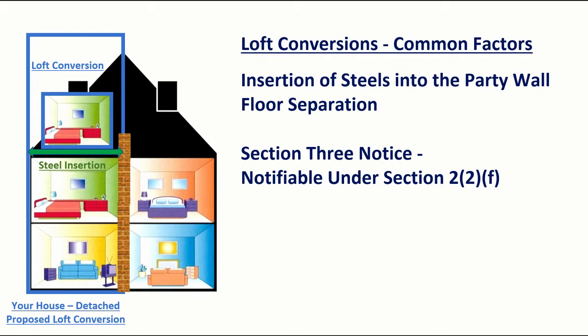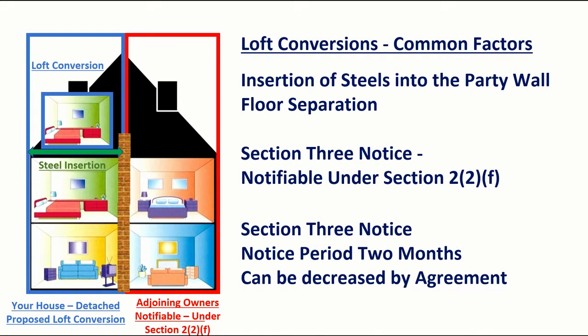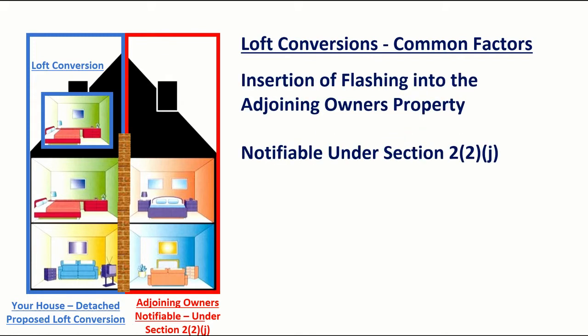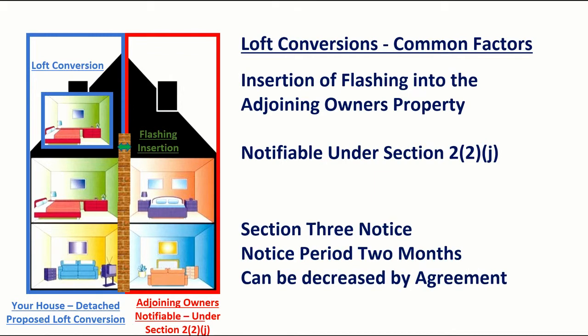It is a section 3 notice for which the normal notice period is two months. This notice period can be decreased by the agreement of the two owners. Loft conversions can also include notifiable works which involve inserting flashing into the adjoining owner's property.